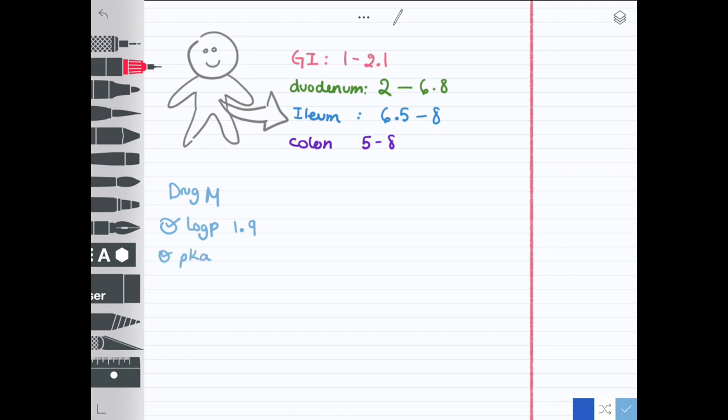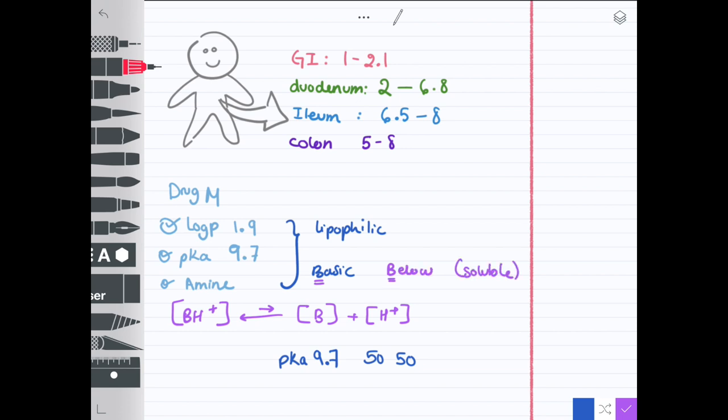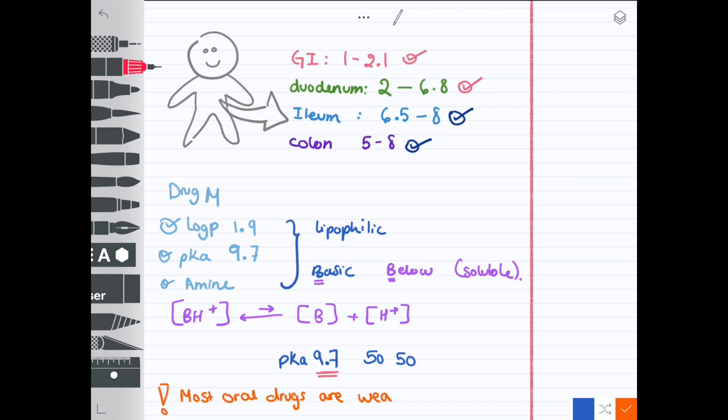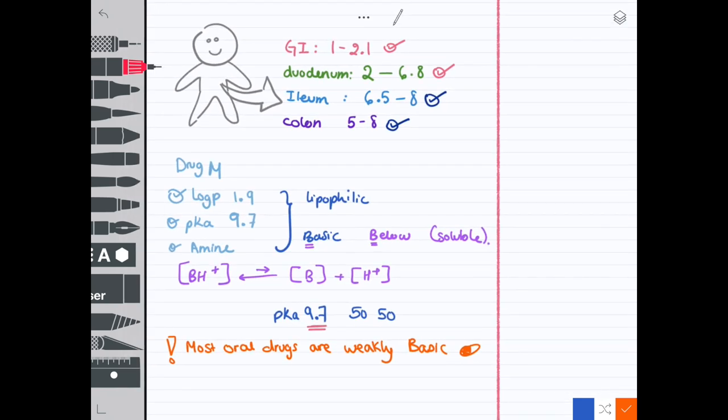Let's take drug M as an example. It has a log P of 1.9, a pKa of 9.7, and it's an amine. So we know it's a basic drug and it's lipophilic. Because its pKa is 9.7, we know that's where it's 50% ionized and 50% unionized. We write down the basic equilibrium equation. From here, we can take a shortcut because we know that basic drugs are soluble below the pKa. For this drug, it would be soluble in the stomach and absorbed in the intestines. Most oral drugs are weak bases for that fact—they're soluble in the stomach and absorbed in the intestines.